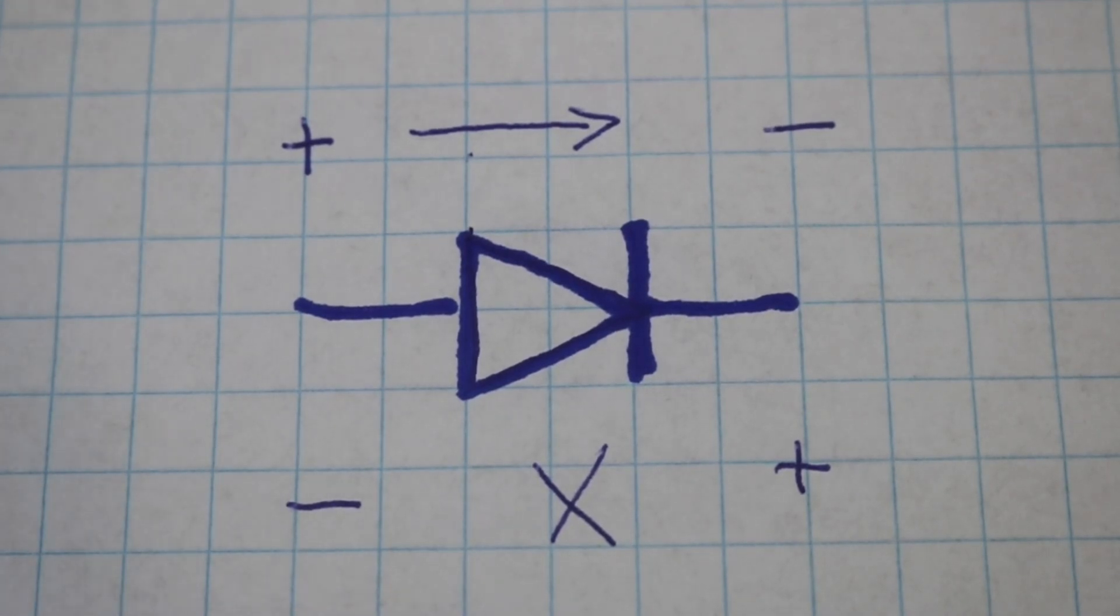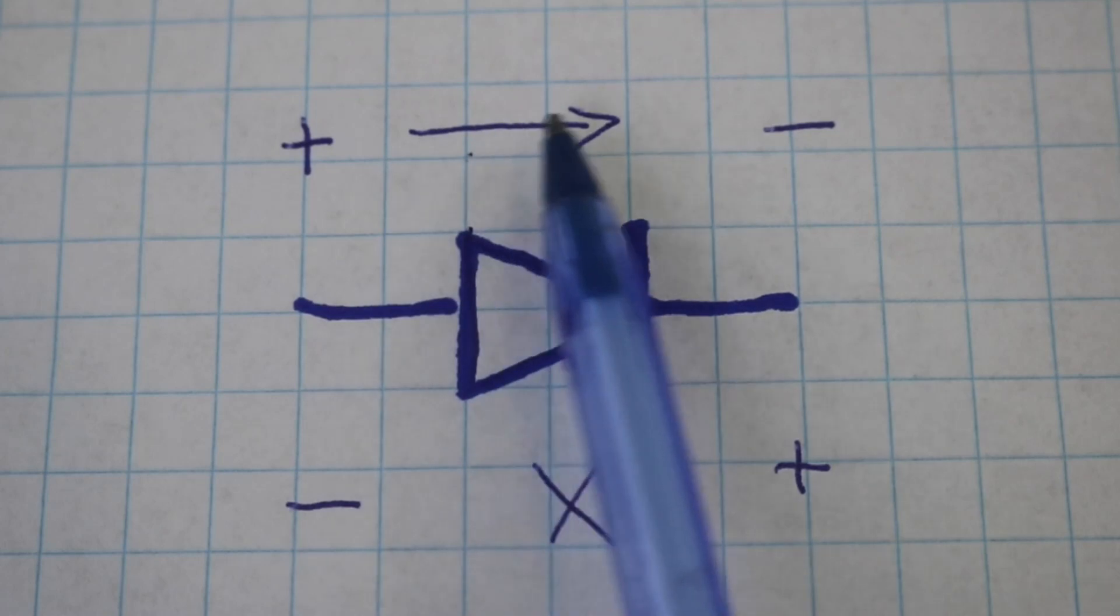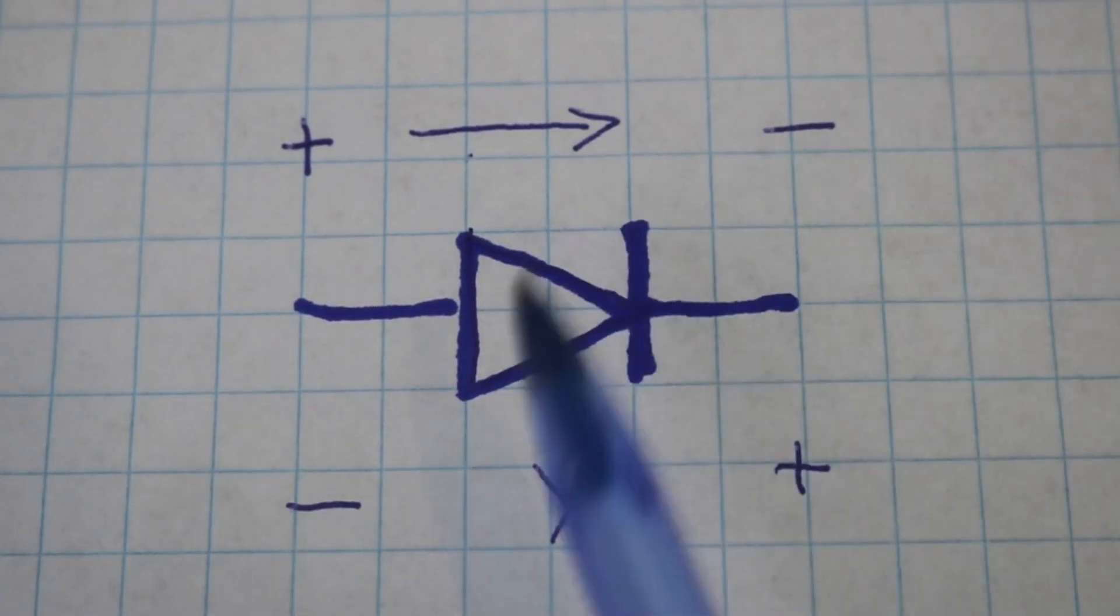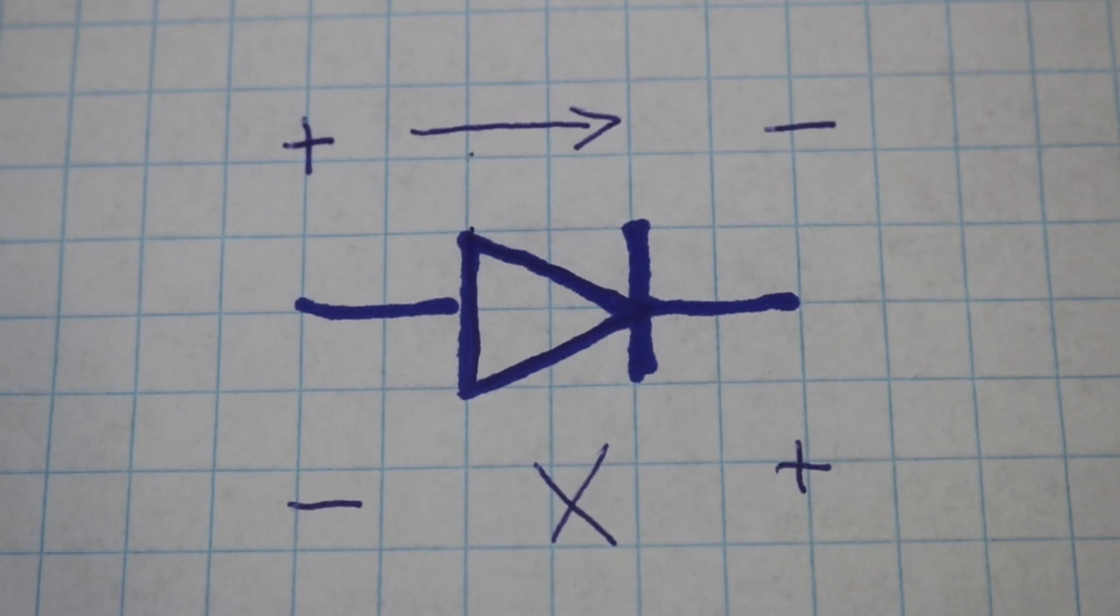And for common silicon diodes, this voltage is around 0.7 volts. That means that the current will only start to flow when the voltage is higher than 0.7 volts. So we can use this characteristic to make a circuit called the clipper circuit.